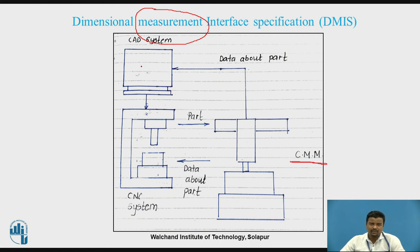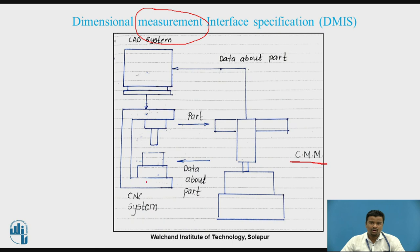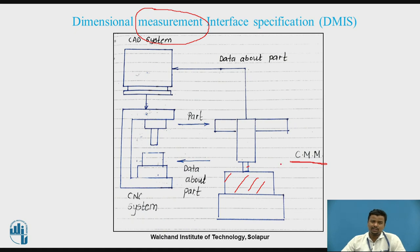For example, you create a CAD model using CATIA software. That model is then provided to a computer-aided manufacturing system such as a CNC — Computer Numerical Control — system, where metal removal processes and sequences of cutting operations are performed. This involves the workpiece, table, cutting tool, spindle, and column. After manufacturing, the product is provided to the CMM. The probe touches the workpiece and automatically measures the dimensions in the computer system. This is the use of Dimensional Measurement Interface Specification.